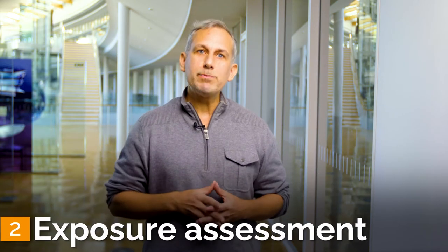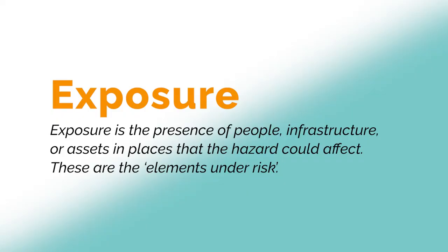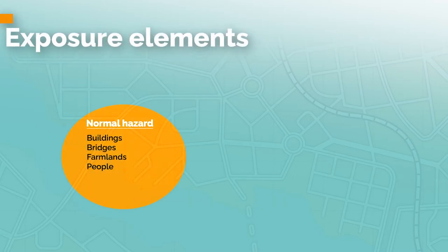Step two: exposure assessment. Exposure is the presence of people, infrastructure, or assets in the place that the hazard could affect — in other words, these are the elements under risk. When dealing with compound and cascading hazards, the most important aspect to consider is the scope of exposure assessment, where the number of elements under risk could grow significantly. For instance, an existing hazard map of a hypothetical town may only include common exposure elements such as buildings, bridges, farmlands, and people located near a particular hazard impact area such as floodplains or near coastal areas.